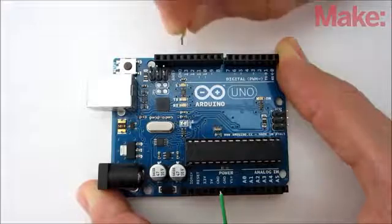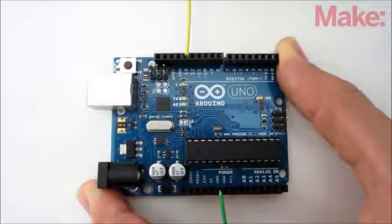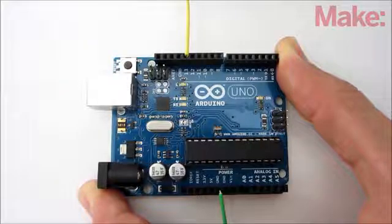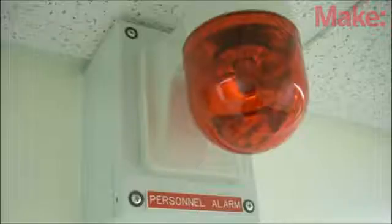For example, if you're using an Arduino, wire it to a digital input pin and use the digital read function to monitor the wire. When it detects a low signal, have it activate the alert system.